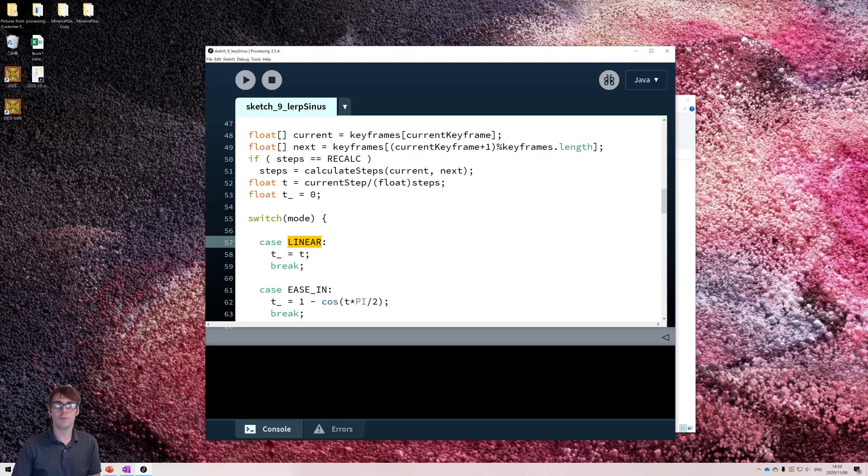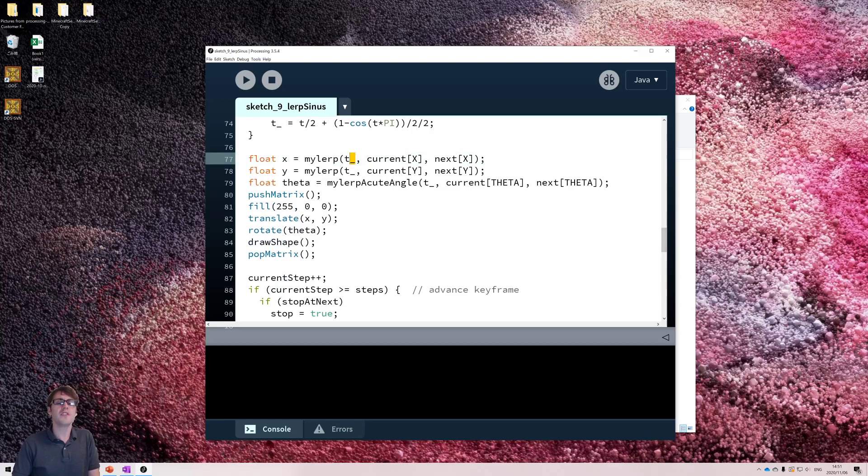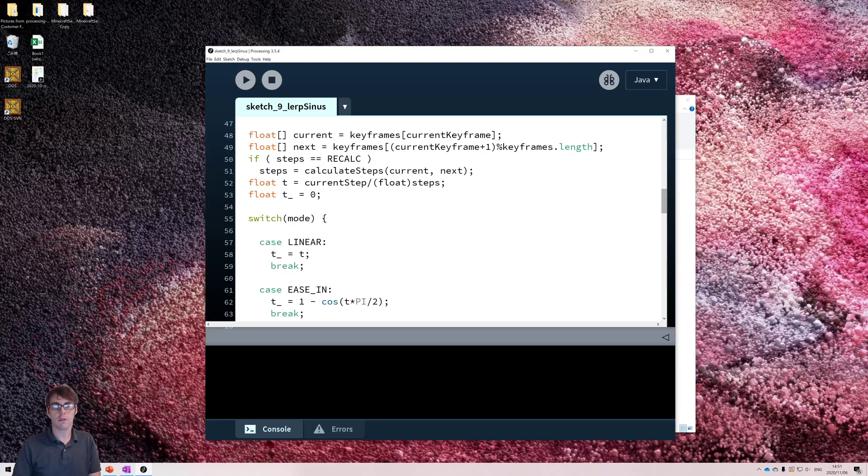Now what I do is I calculate a t prime, which uses a function I just showed you. So if I'm going to use a linear function, my t prime becomes t. That's it. If I'm going to use my ease-in function, I'm going to use the one I showed on my slide. 1 minus cos t. And I'm going to scroll past the rest, and you see that I just now used this t prime in my lerp function. So I don't have to change lerp. Lerp is still linear, but their t prime is a nonlinear change in t. So everything stays the same. All I have to do is use a t prime, which uses the function I showed you. So let's see how this looks.